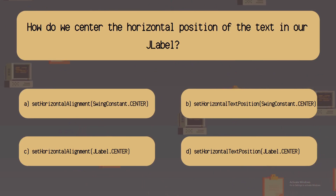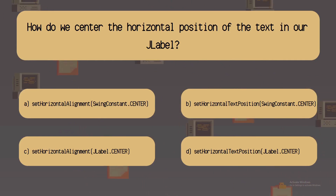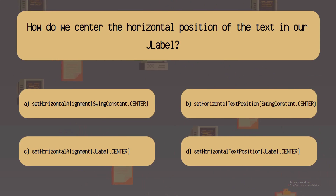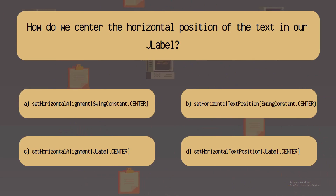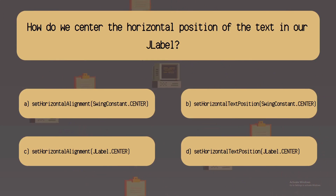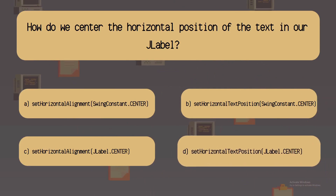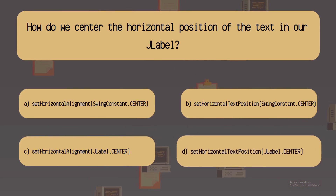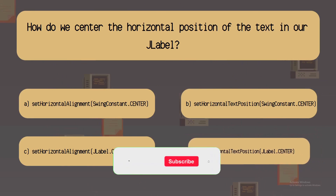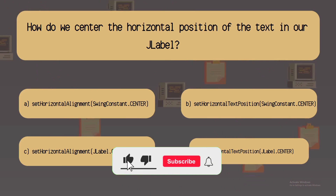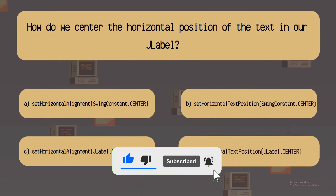Now it's quiz time. How do we center the horizontal position of the text in our JLabel? You have 15 seconds to answer the question — leave your answer in the comments below. Time's up. The answer is D: setHorizontalTextPosition, and then we pass in JLabel.CENTER. Leave a like and subscribe if you enjoyed the content and want more. Next up, we'll be going over JButton — I'll see you guys then.